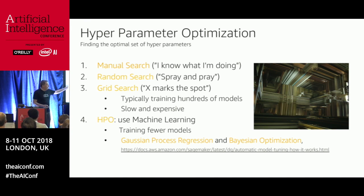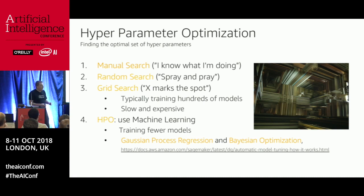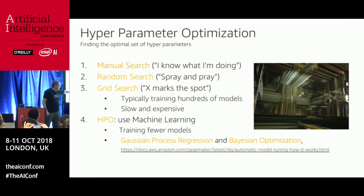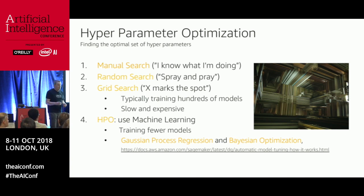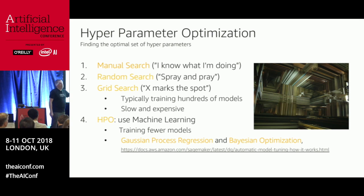The clever way is HPO: use machine learning to solve machine learning. This has been proven to require fewer training runs because every time we train, we get a new data point — for this combination of parameters, this is the accuracy we get — and by stacking those results and applying optimization, we can get quickly to a really good set of parameters. This uses two techniques called Gaussian process regression and Bayesian optimization. The intuition isn't complicated, but the math is crazy complicated.